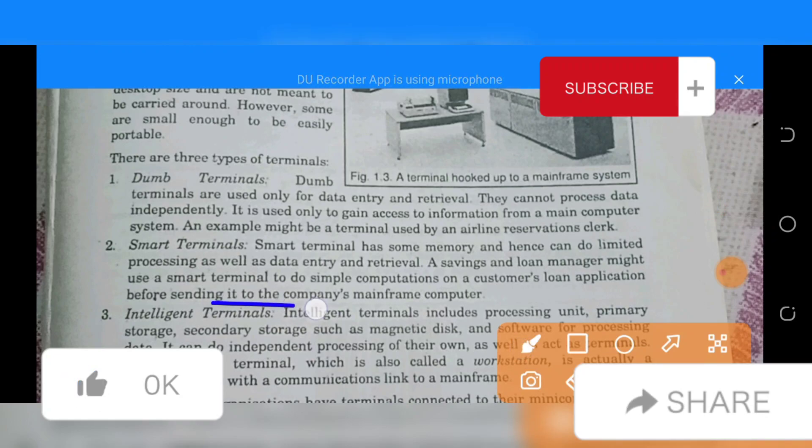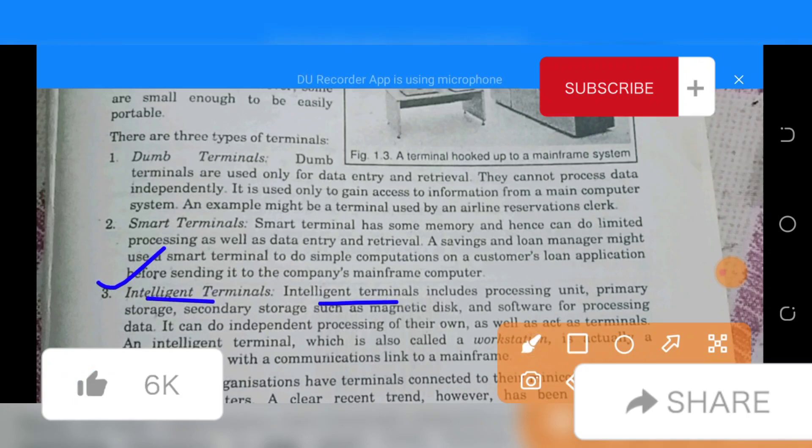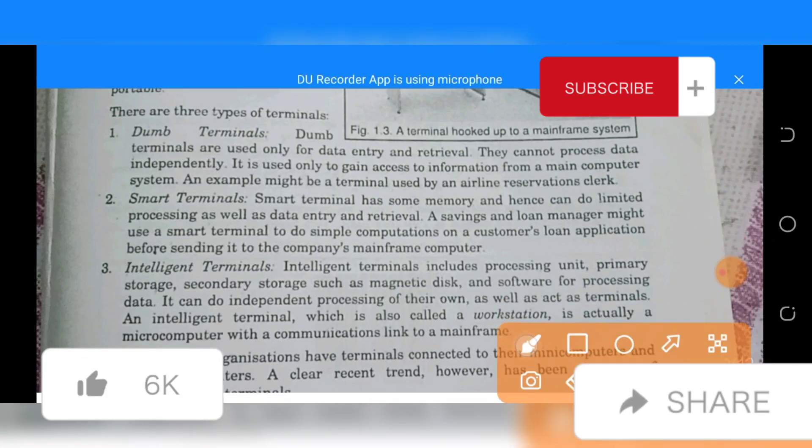Number three: Intelligent terminal. An intelligent terminal includes a processing unit, primary storage, secondary storage such as magnetic disk, and software for processing data. It can do independent processing of their own. An intelligent terminal, which is also called a workstation, is actually a microcomputer with a communication link to a mainframe.